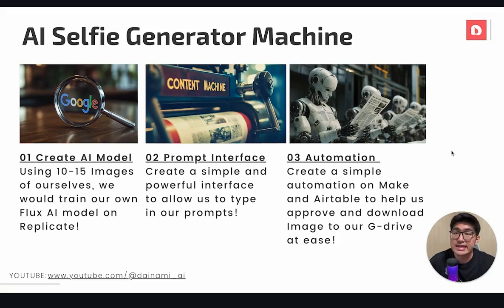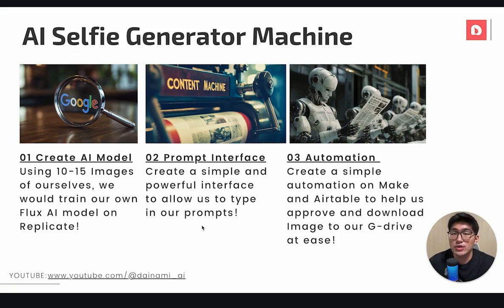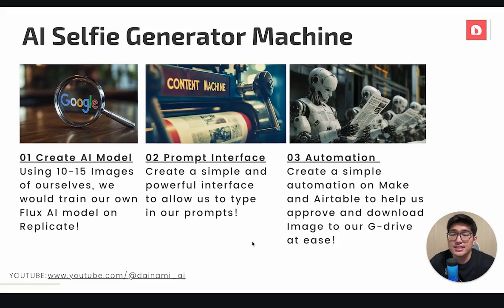So how does this AI selfie generator machine work? First, we use 10 to 15 images of ourselves to train our AI model on Replicate. Once we have created our AI model, we'll then create a simple and powerful Chrome extension interface that allows us to type in our prompts and trigger the AI automation. We'll also create a simple automation on Make and Airtable to help us approve and download these images to our Google Drive.